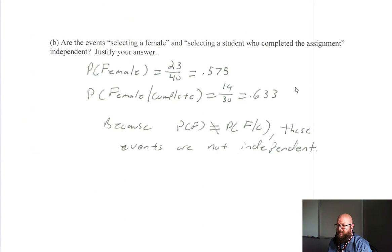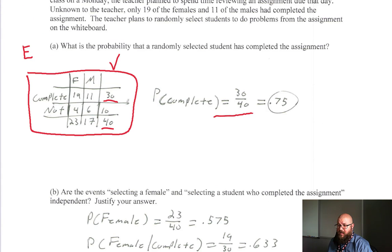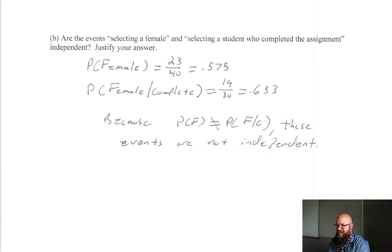Let's look at Part B. It asks: are the events selecting a female and selecting a student who completed their assignments independent, and justify your answer? Hopefully you all saw just by looking at the two-way table that they would not be independent — between selecting a female and who completed their assignments, those are going to cross. That 19 is the key factor that plays into this, so you can tell automatically they are not independent.